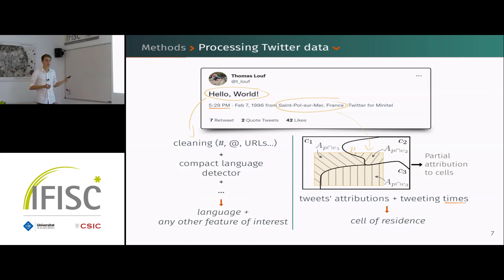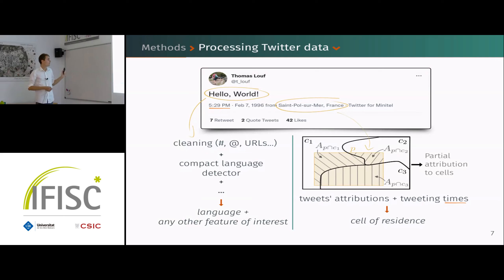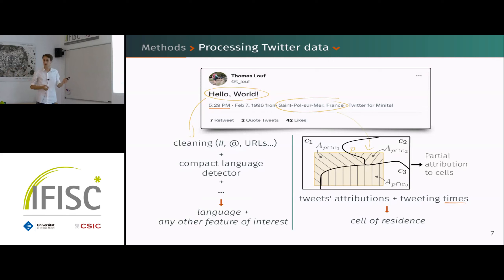The first step we always do is to clean the text, because it can contain hashtags, URLs, or mentions of other users, which are not natural speech production. Then every time we also do some language detection and other steps to get some feature of interest.